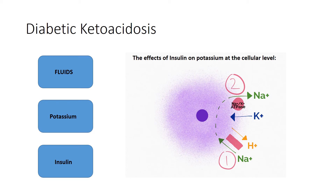Most of these patients are dehydrated, so you want to get fluids on board. If you need to review fluid management in the ICU setting, you can watch that video — I'll link it in the description below. You also need to start regular insulin, and you're going to treat the patient with insulin until the anion gap has closed after two subsequent blood draws and the patient is able to tolerate oral intake. Then you can discontinue the insulin infusion and start subcutaneous insulin.